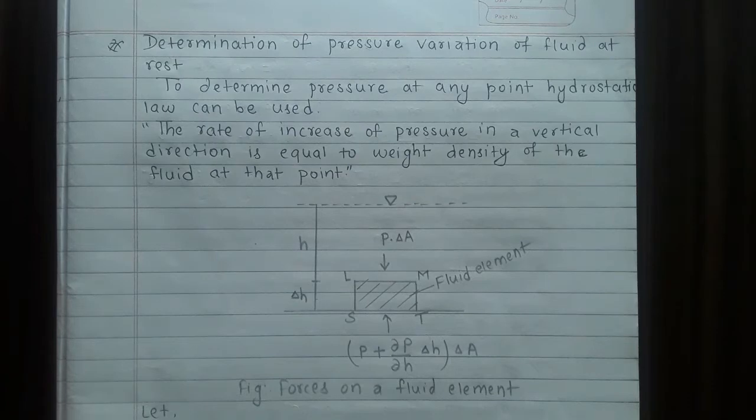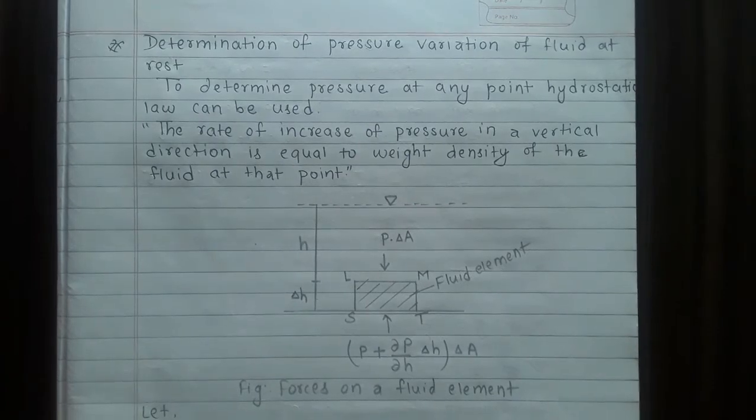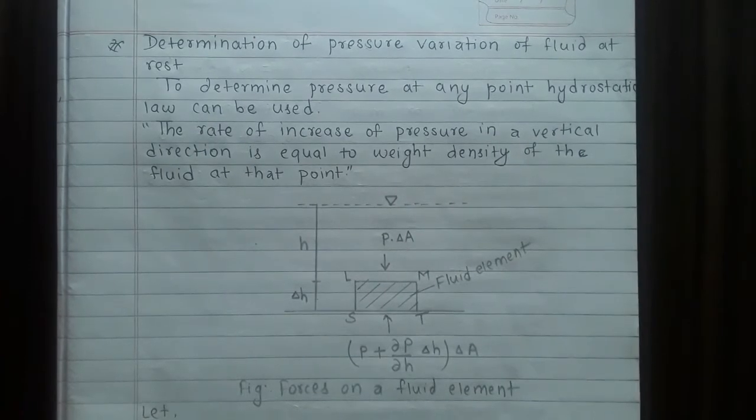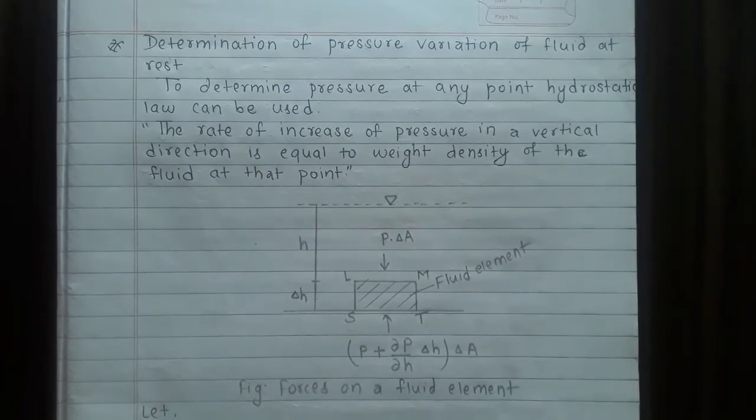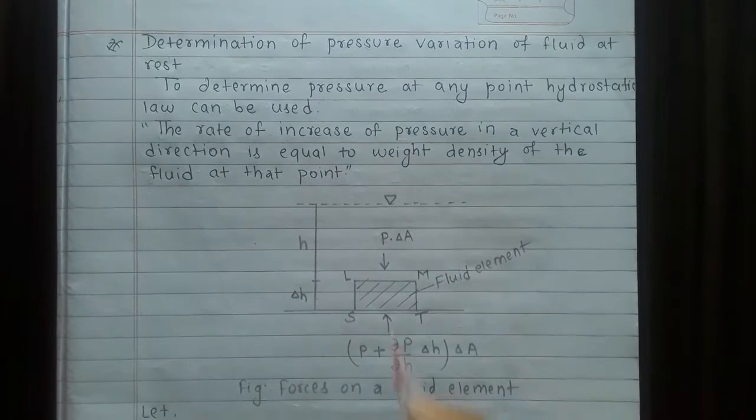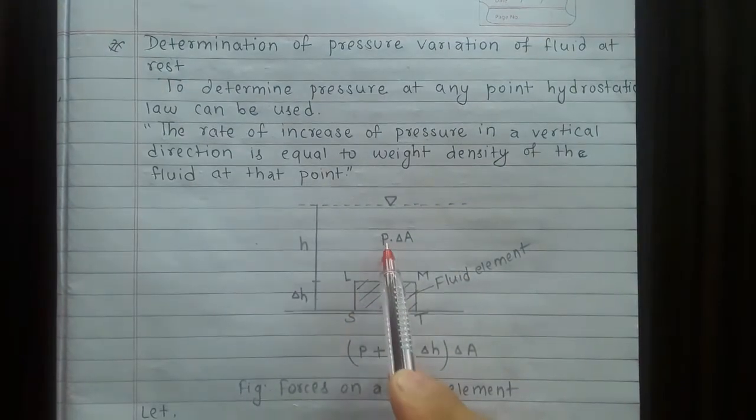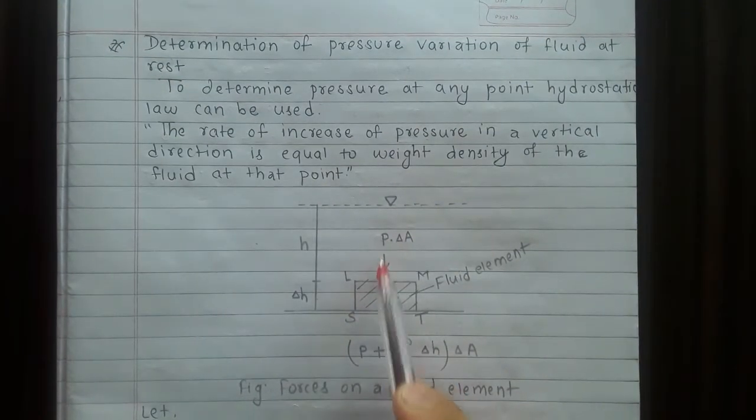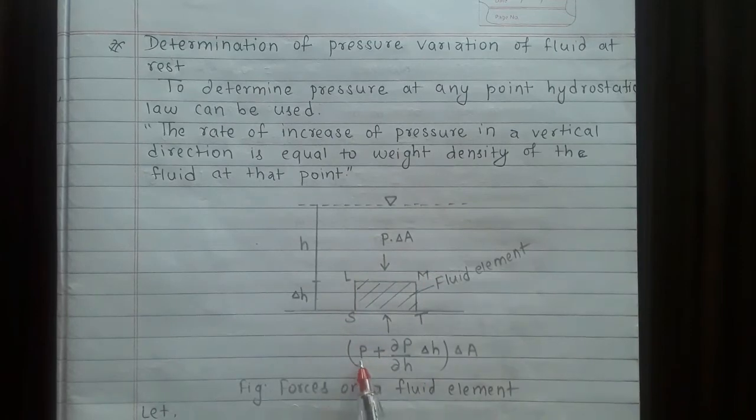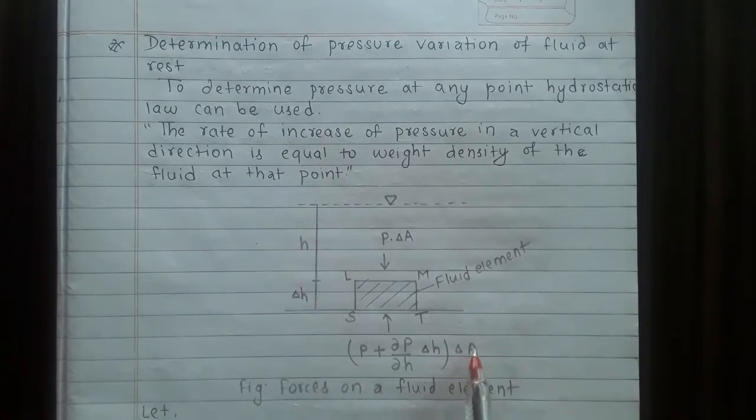Now we have to figure it out. Here is the fluid element. This is the downward acting force: P plus dP/dh into delta h, and the whole is multiplied by delta A.